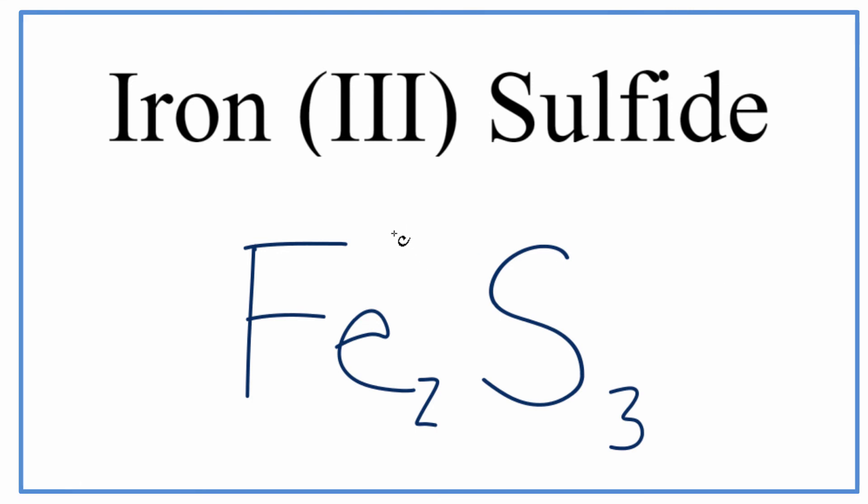So let's put our charges back. We had a plus three for iron because of this Roman numeral here, and we looked on the periodic table. The sulfur was minus two. So two times plus three, that gives us plus six, and three times minus two, that gives us minus six.